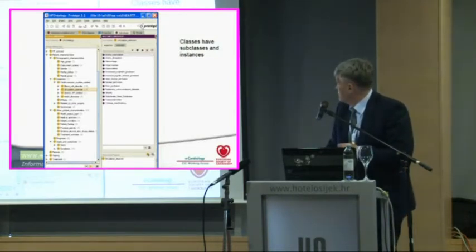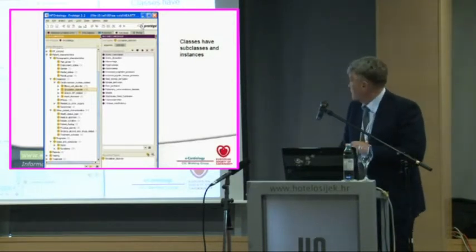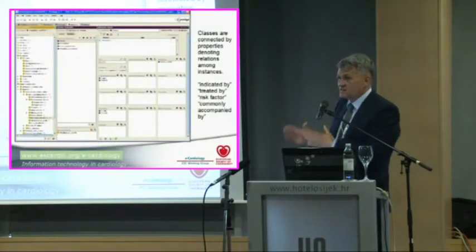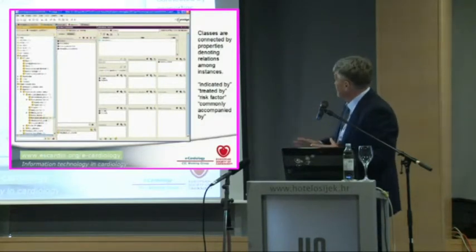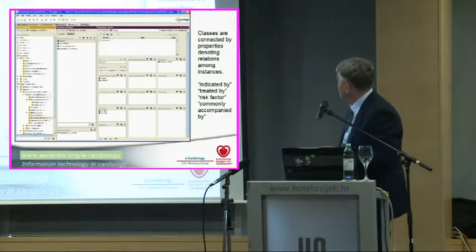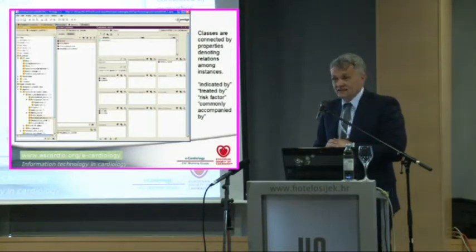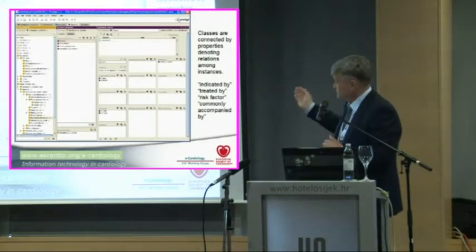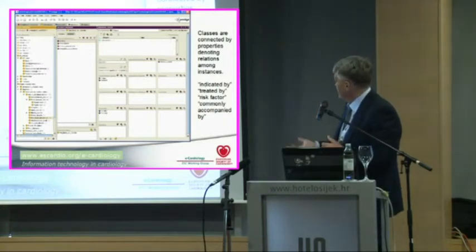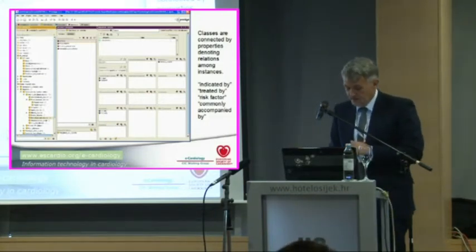So we have concepts, we have taxonomy, subclasses — and then we have what is on the right. Classes are connected by properties denoting relations among instances. Examples of relations are: indicated by, treated by, risk factor, commonly accompanied by, and so on. About 100 of them in this ontology.